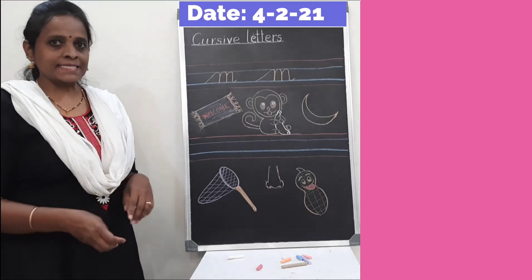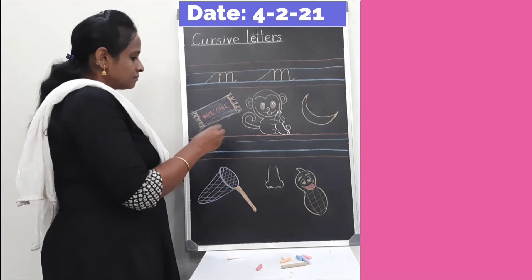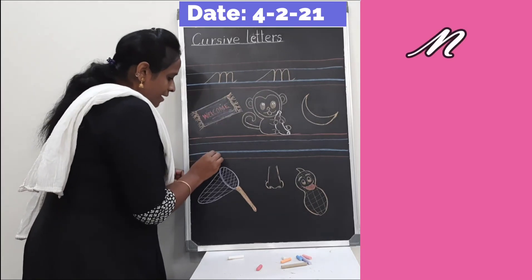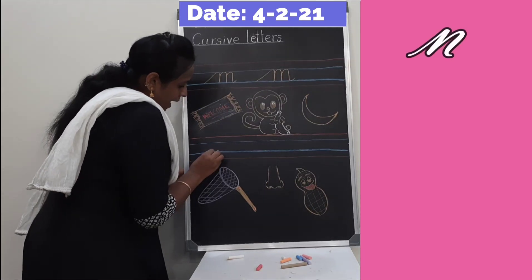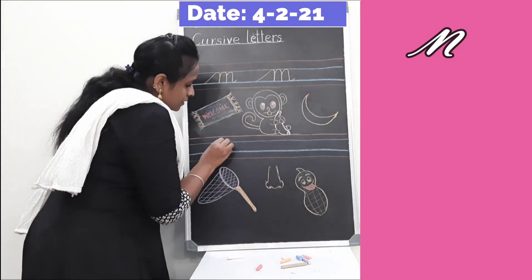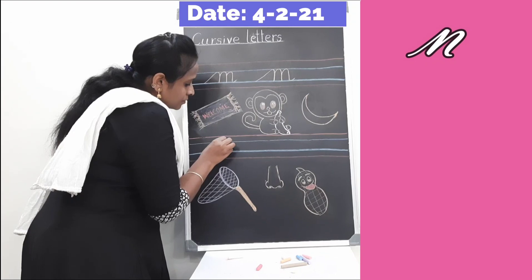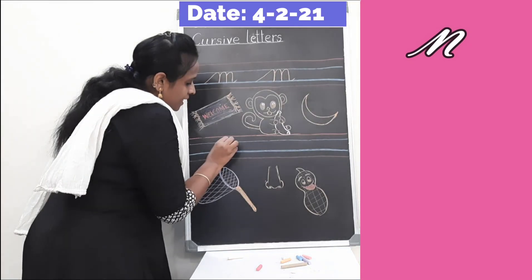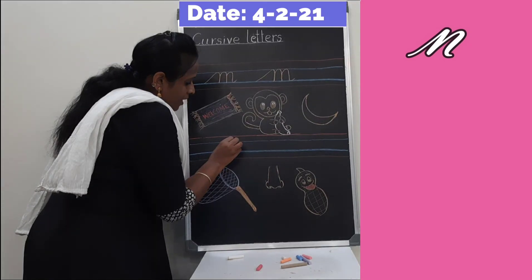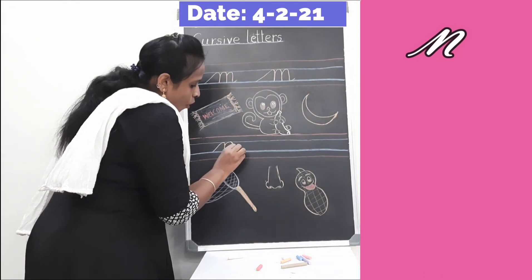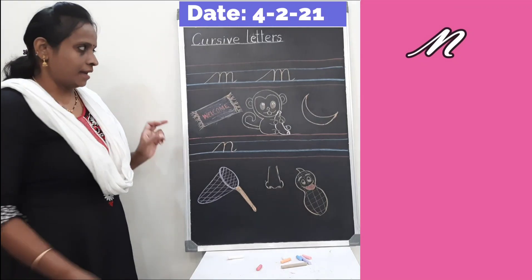Shall we go to the next letter? Yes, this is cursive N. From the second blue line, go up and touch the first blue line with a slanting line. Come down with a standing line, touch the second blue line. Go up, take a curl, come down, touch the second blue line with a small tail. Cursive N.